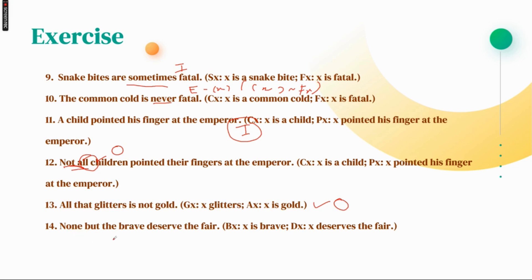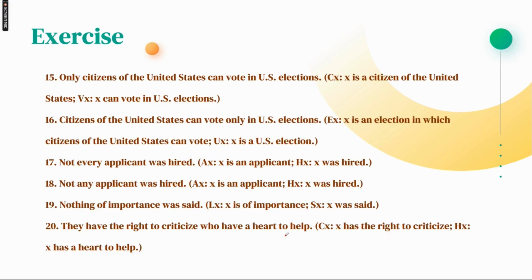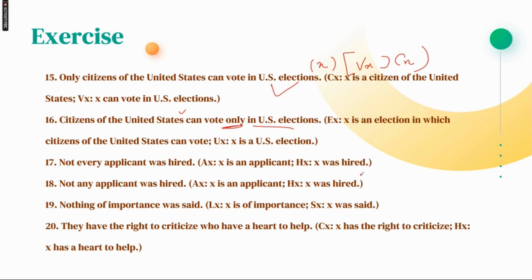'None but the brave deserved the fair' — number 14 is A proposition. 'None but the brave' — again this is A proposition, and it uses the 'only' form: VX horseshoe CX. Number 16 is again an 'only' condition — with 'only,' the term that comes after it becomes your predicate and the other becomes your subject. 'Not every applicant was hired' means some applicants were not hired, so that is O proposition.